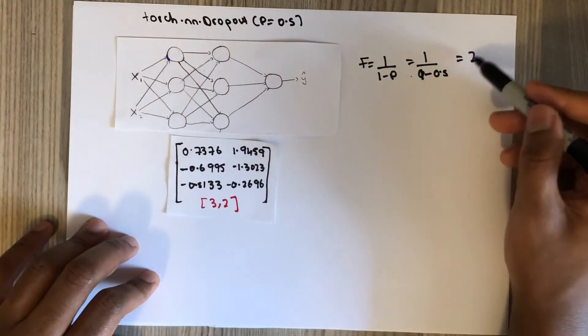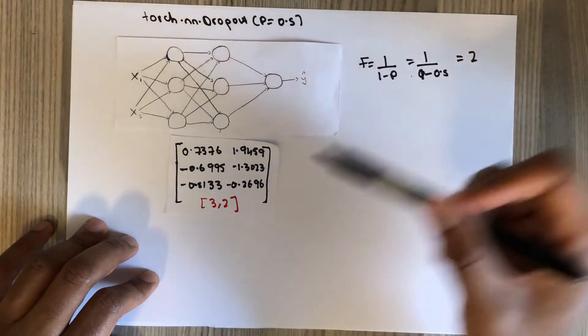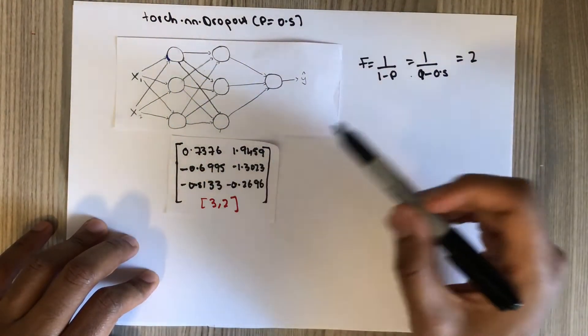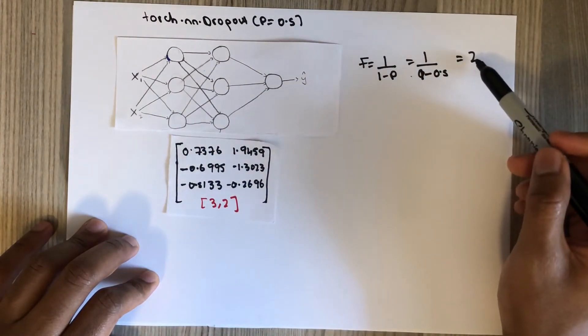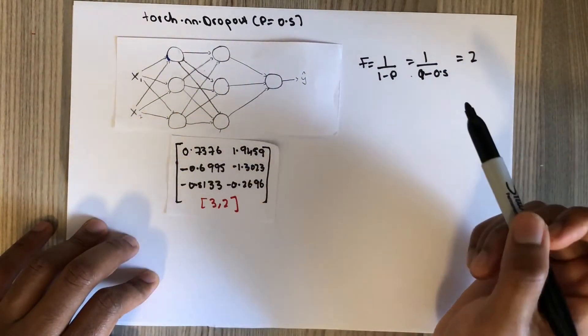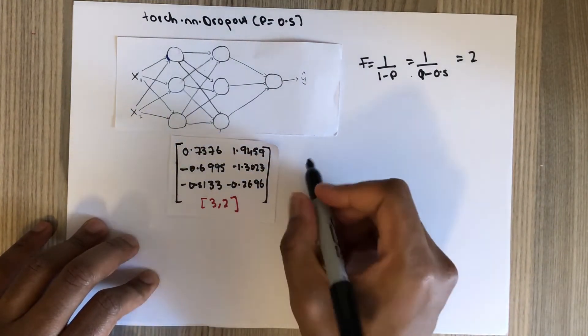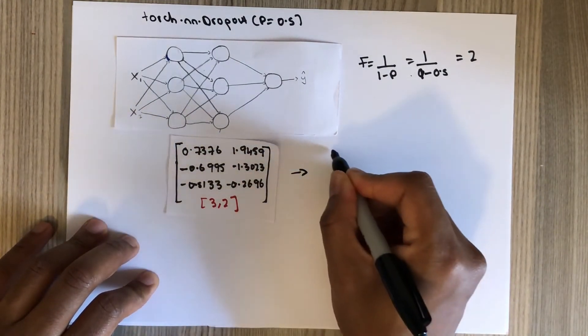And this scale factor, you know some of the values will be zero, so you need to make up for that. That's why we have a scale factor that is multiplied by the non-zero values. But let's see how it is. So these activations will be converted to something like this.